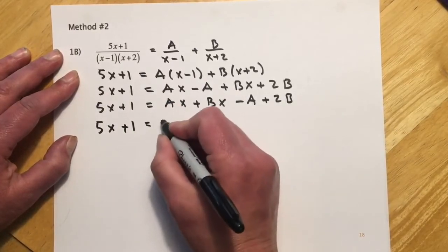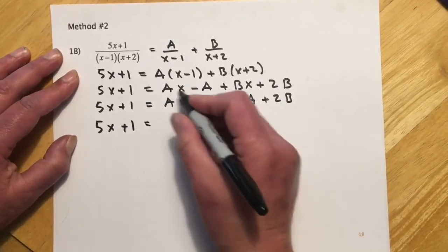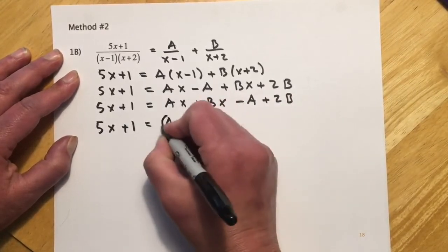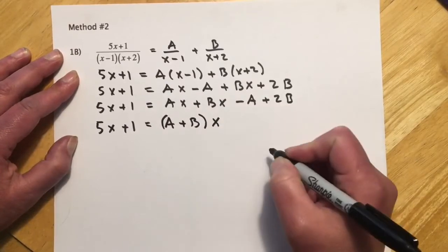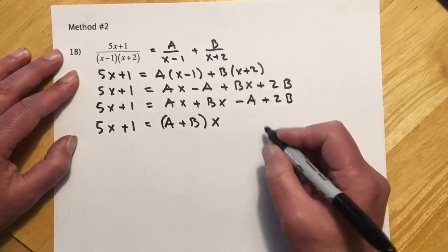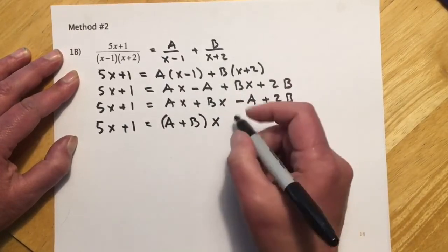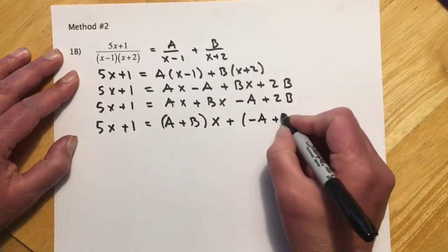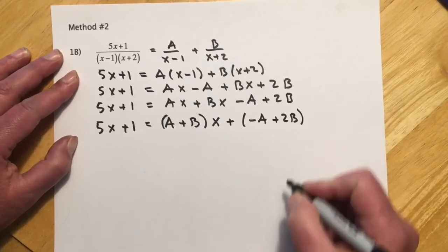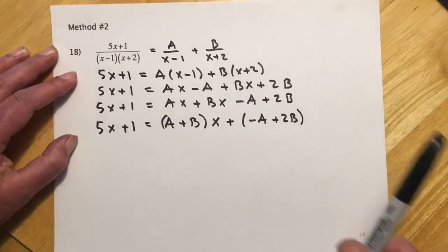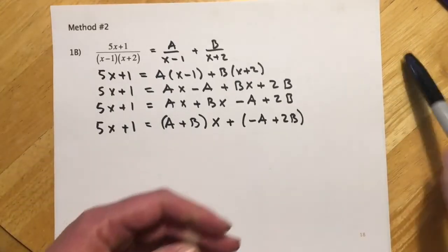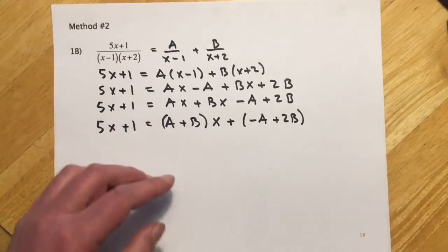And I'll show you, it'll make more sense once I do it. So this is going to equal, so I'm factoring the x, but I'm going to write it as (A+B) times x. And then, so I'm writing the x second. And then this is going to be plus (-A+2B). And so what we do then is we match up the two sides of this equation.